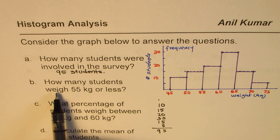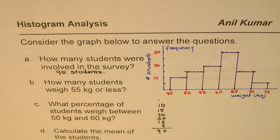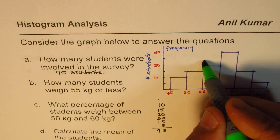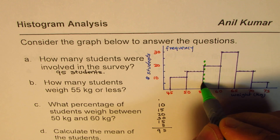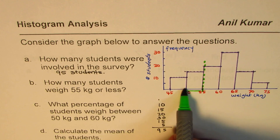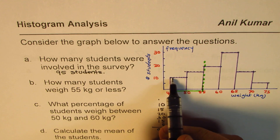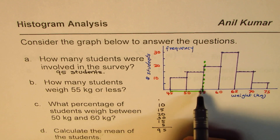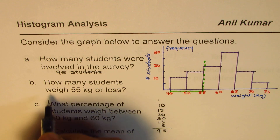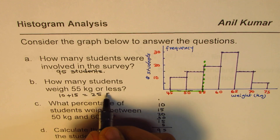Now the question is: how many students weigh 55 kg or less? In this histogram, 55 kg or less means the students on the left side. That is the groups we need to look into, so that is 10 plus 15. All these students weigh 55 kg or less, so it is 10 + 15 = 25 students.